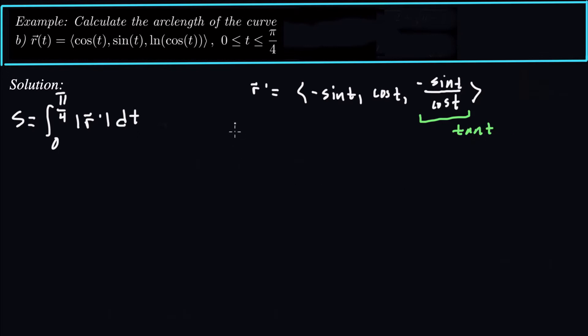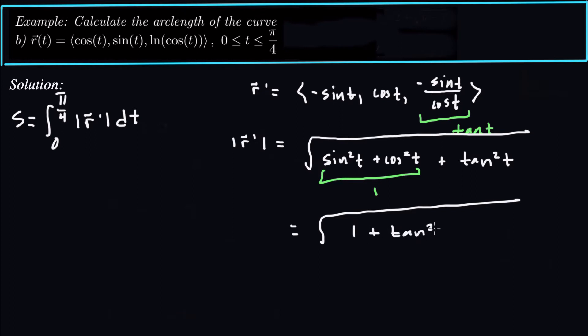So now I'm going to take the magnitude of R prime, and that's going to be square root sine squared t plus cosine squared t plus tangent squared t. And aha, one more thing that can simplify from trig is this is just 1. So this is equal to the square root of 1 plus tangent squared t. The square root of 1 plus tangent squared, well, 1 plus tan squared is just secant squared. So this is the square root of secant squared t.